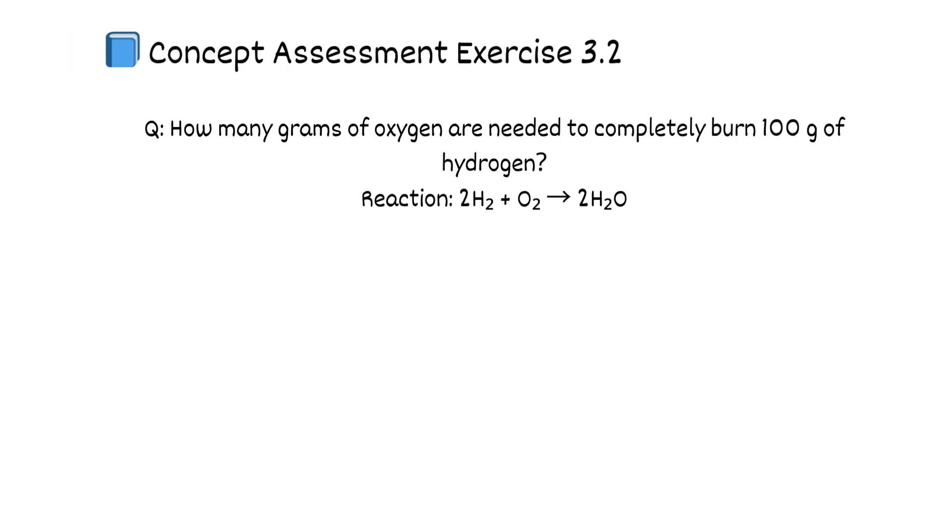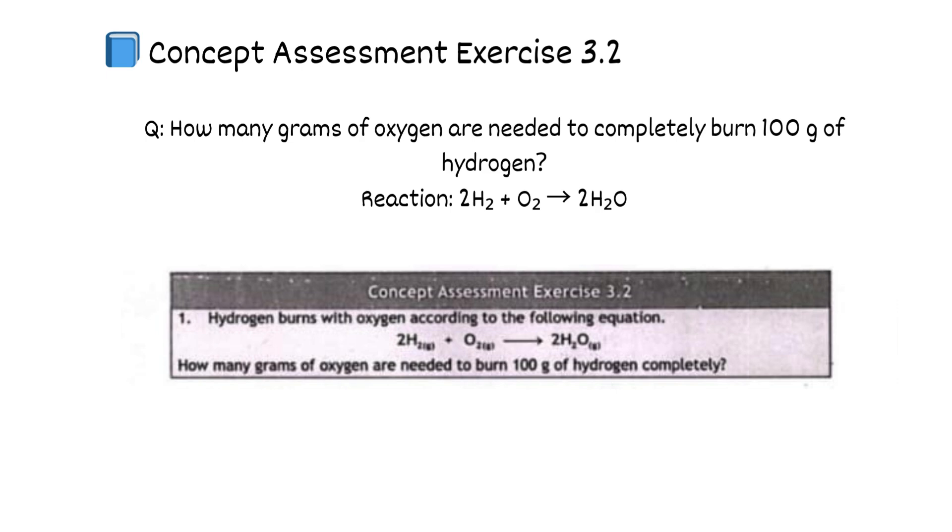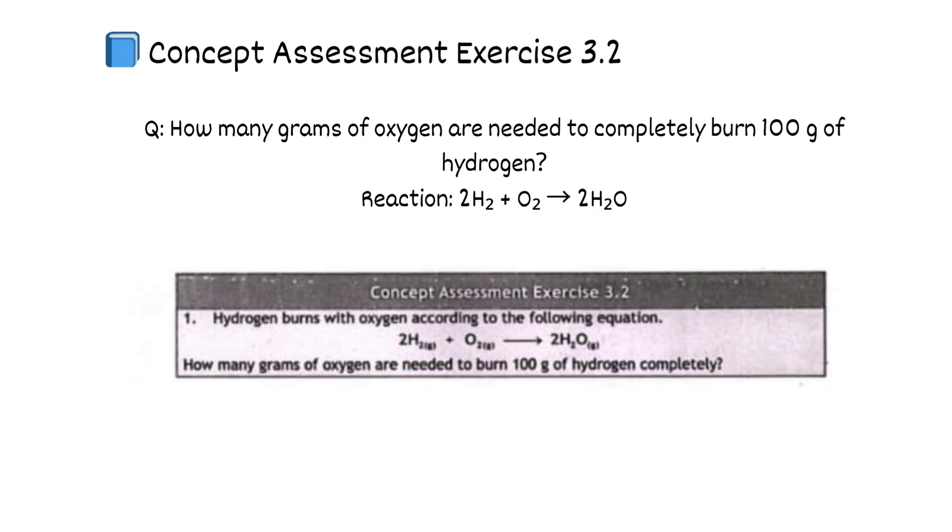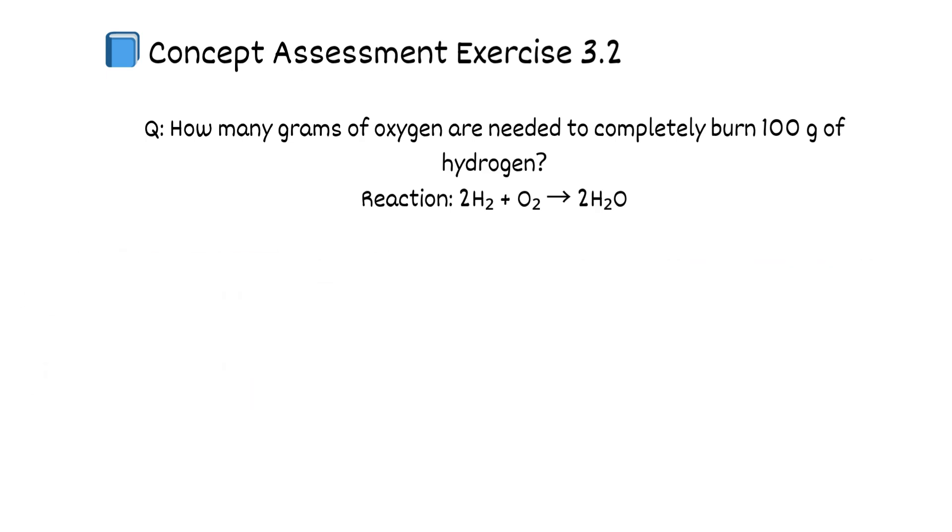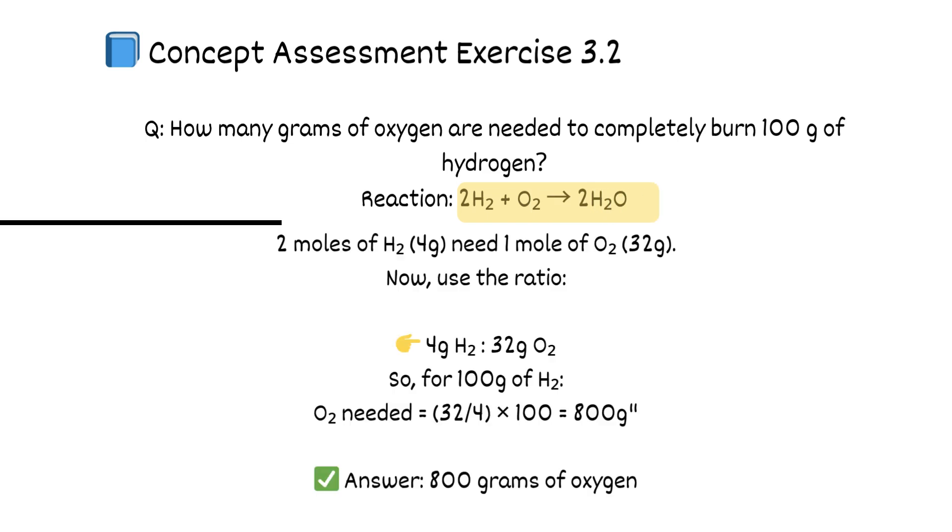Concept Assessment Exercise 3.2. How many grams of oxygen are needed to completely burn 100 grams of hydrogen? Reaction: 2H2 plus O2 equals 2H2O. From the equation, 2 moles of H2 (4 grams) need 1 mole of O2 (32 grams). Now use the ratio: 4 grams H2 to 32 grams O2.